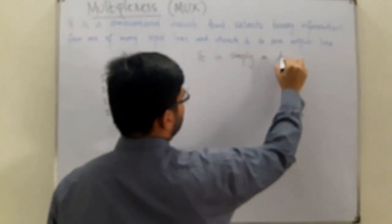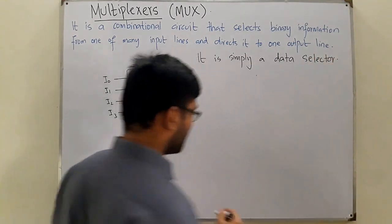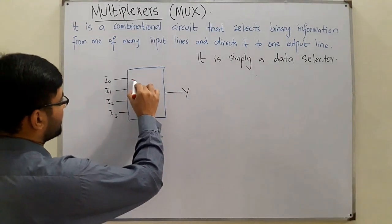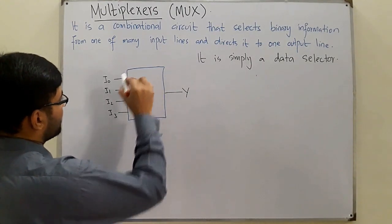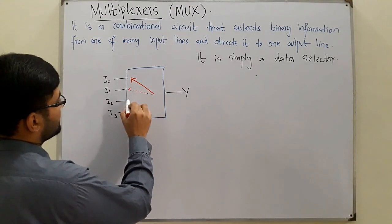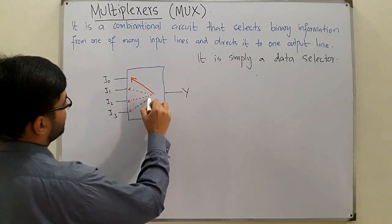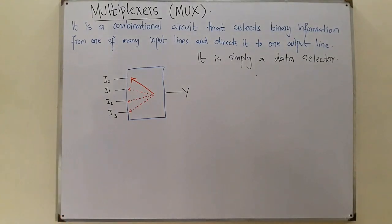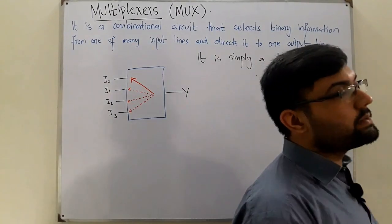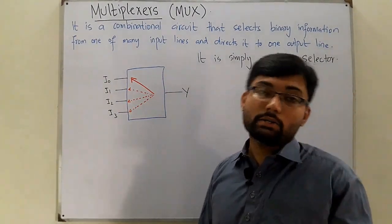We can say that the multiplexer is simply a data selector — it selects from the inputs. Sometimes I₀ is selected, sometimes I₁, sometimes I₂, and sometimes I₃.